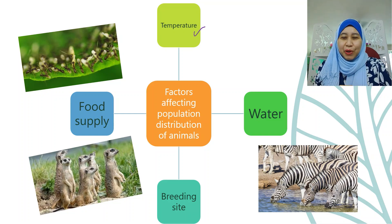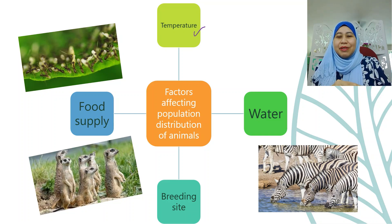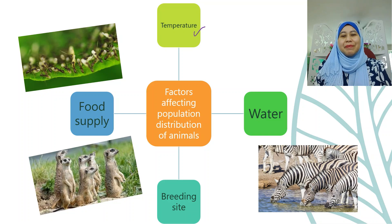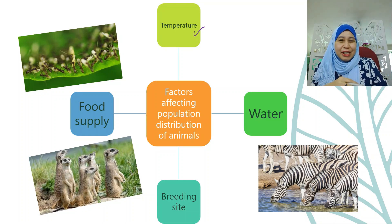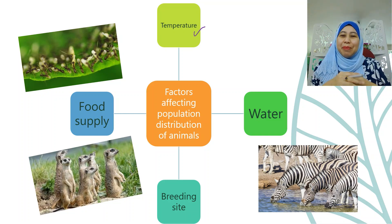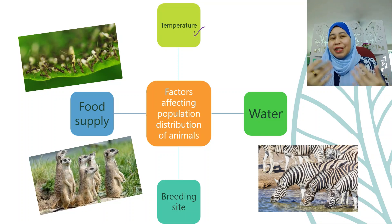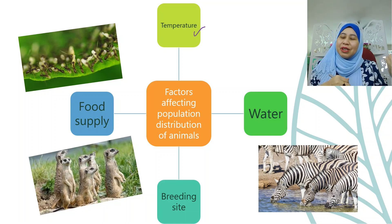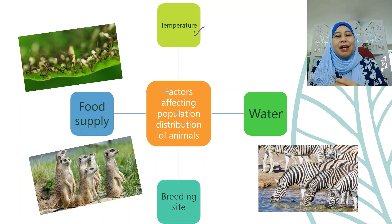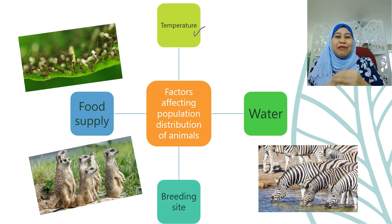Next is water. You can see the photo of zebras — areas with water sources will be inhabited by animals, especially for drinking purposes. The last factor is breeding site. A safe and suitable breeding site is important for animals to raise their offspring. All the factors mentioned in this slide and the previous slide are abiotic components — meaning non-living components — that affect the population distribution of plants and animals.